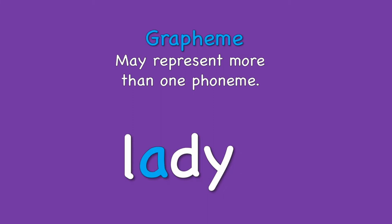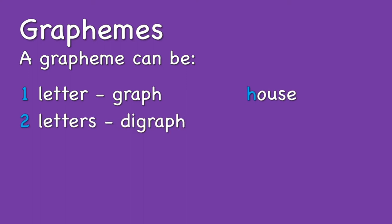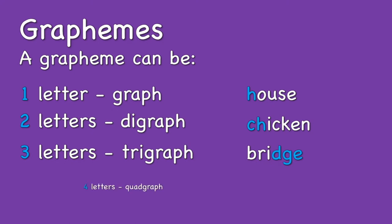Graphemes come in many forms. A grapheme with one letter is called a graph. If it has two letters, it's called a digraph. Three letters is a trigraph, and four letters is a quadgraph.